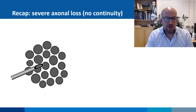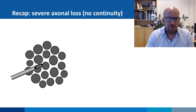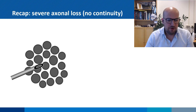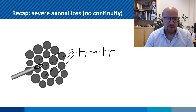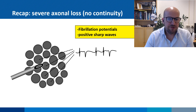However, in cases of severe nerve injury, all axons are lost and all muscle fibers have lost contact with their axon. After about a week or two or so, they start producing spontaneous muscle fiber activity. This activity is visible in the shape of positive sharp waves and fibrillation potentials.